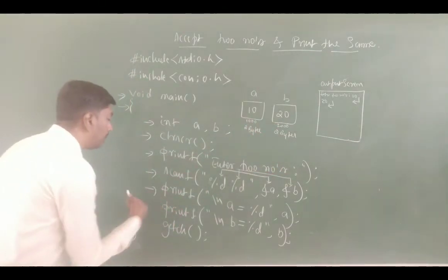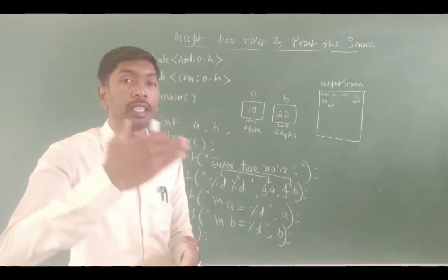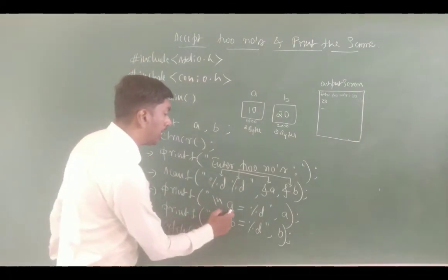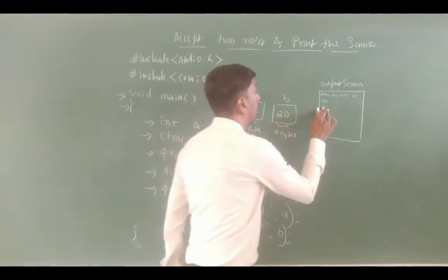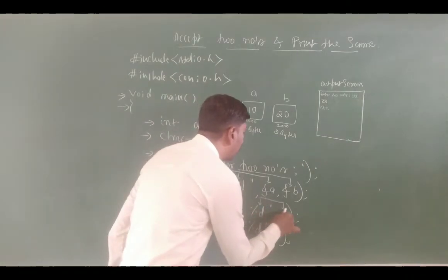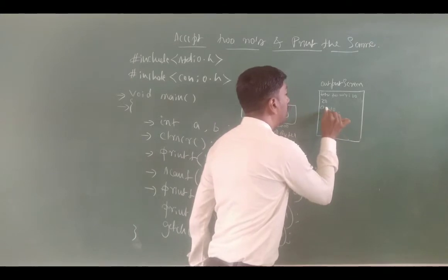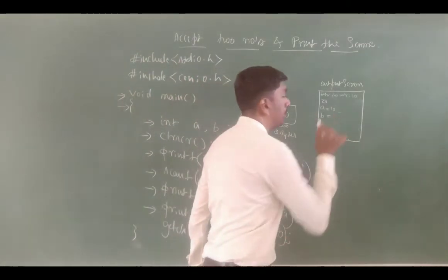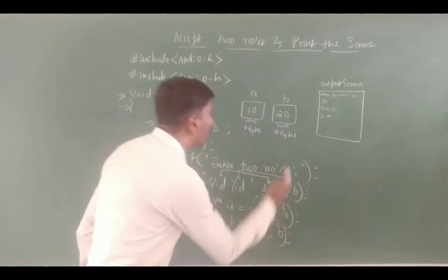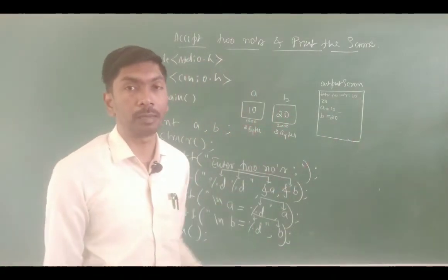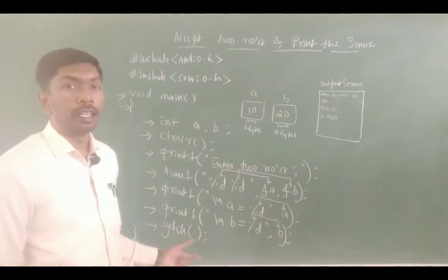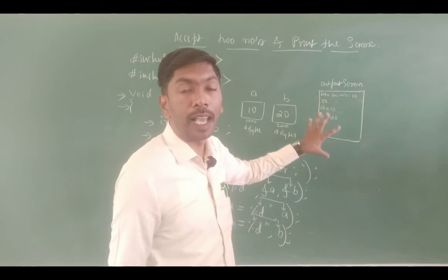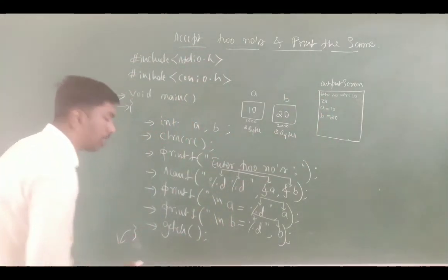scanf execution is complete. Next, printf with \n moves the cursor to the next line. "a is equal to %d", a — a is 10, so it displays "a is equal to 10". Then printf "\nb is equal to %d", b — b is 20, so it displays "b is equal to 20". After getch(), we can see the screen. The final output is: a is equal to 10, b is equal to 20.